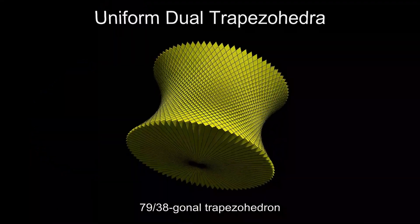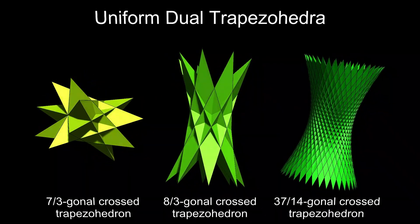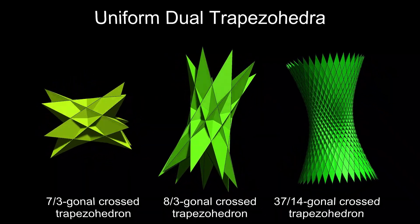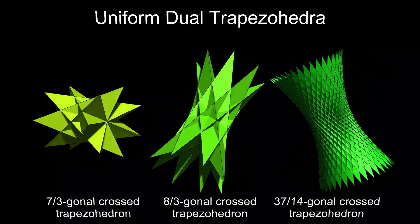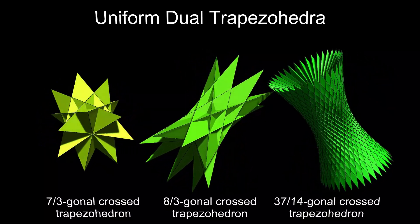Furthermore, antiprisms can be crossed, in which case the dual is a crossed trapezohedron. These have concave, dart-shaped faces.